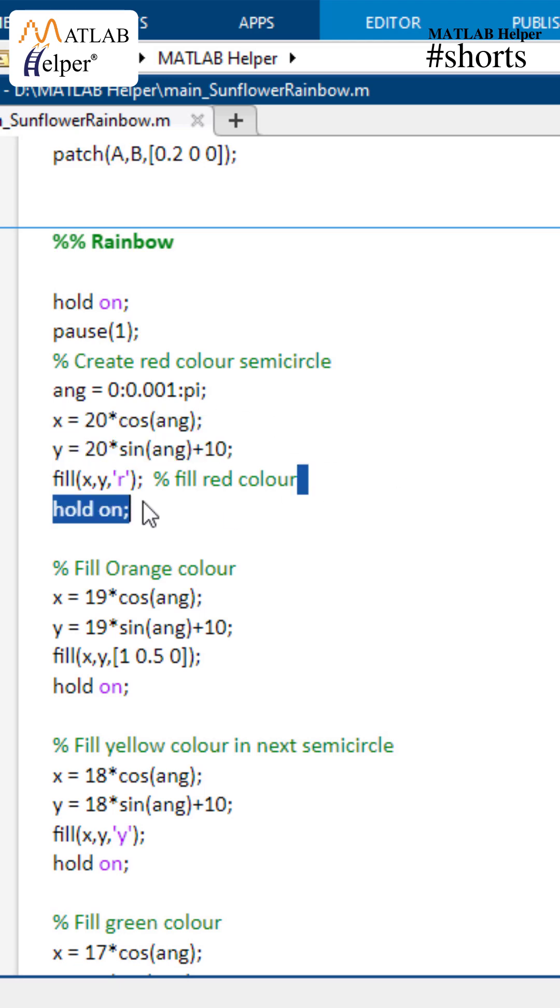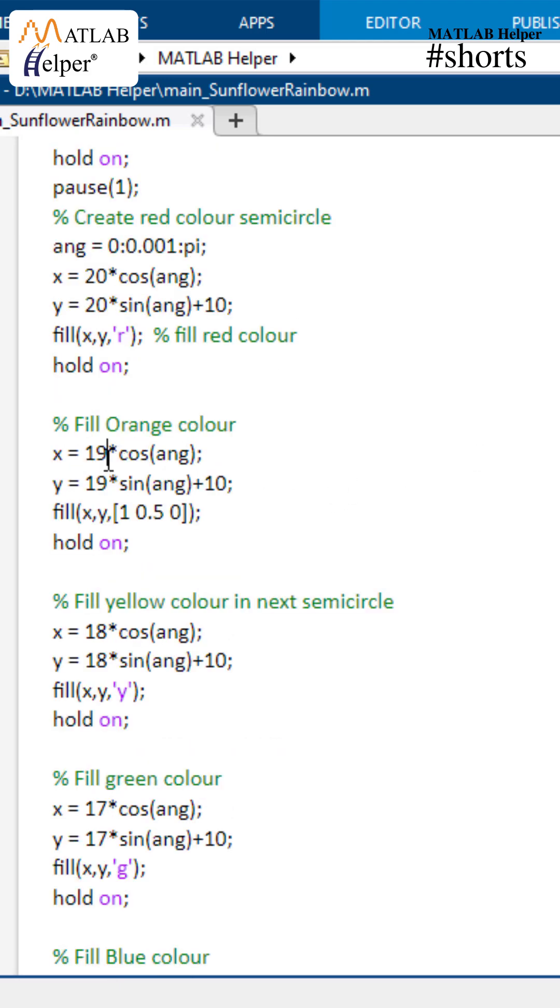Here we reduce a number from 20 to 19 to create a smaller semicircle than the previous one. This is filled with the orange color.